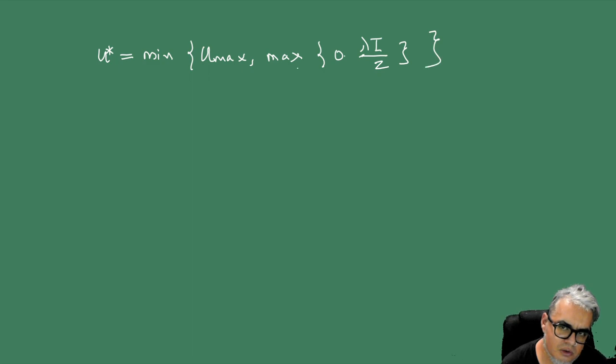Entonces finalmente tenemos que U estrella debe ser el mínimo entre U max y el máximo de cero y lambda I sobre 2. Y una vez teniendo eso, podemos, haciendo integral numérica para el sistema de las I's y de las lambdas, obtener la prevalencia y el control al que corresponde esta U crítica.